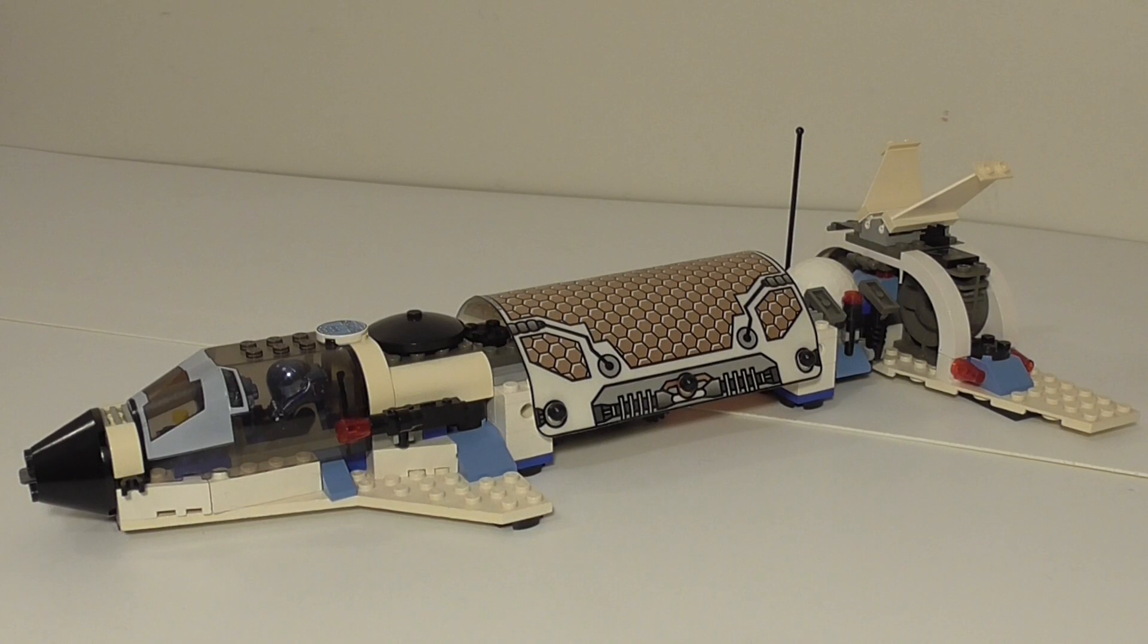Hi friends, Andy Brooks here with another review. We've got set 7315 from 2001, came with 242 pieces and it is called the Solar Explorer, and it was in the theme Life on Mars.